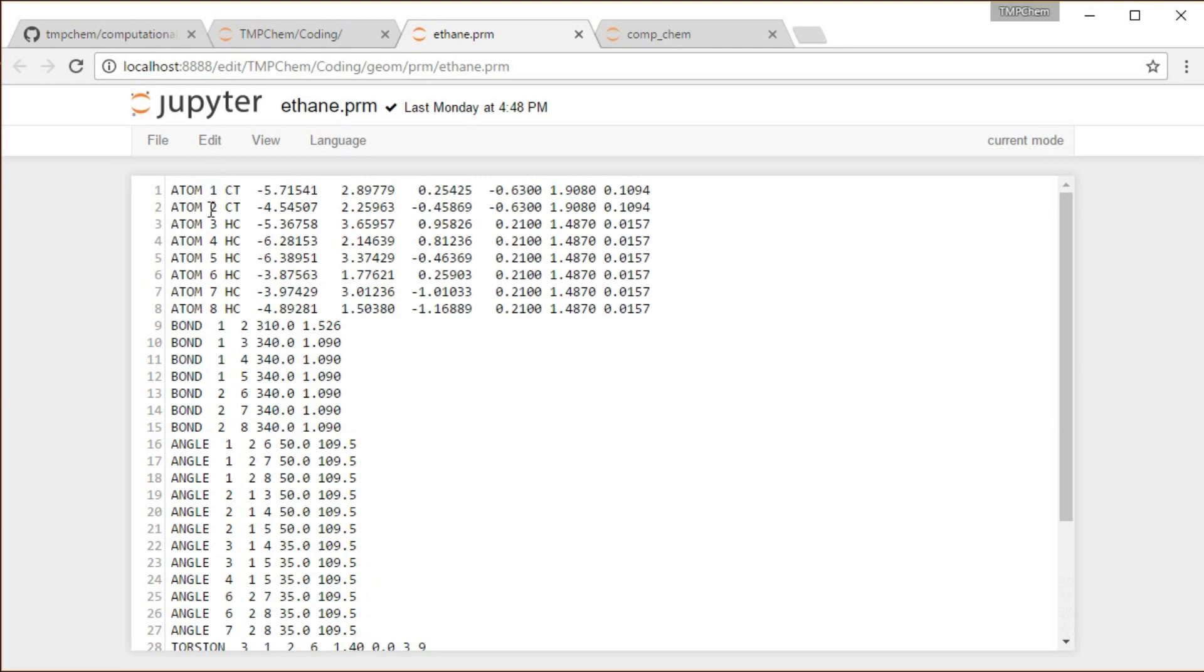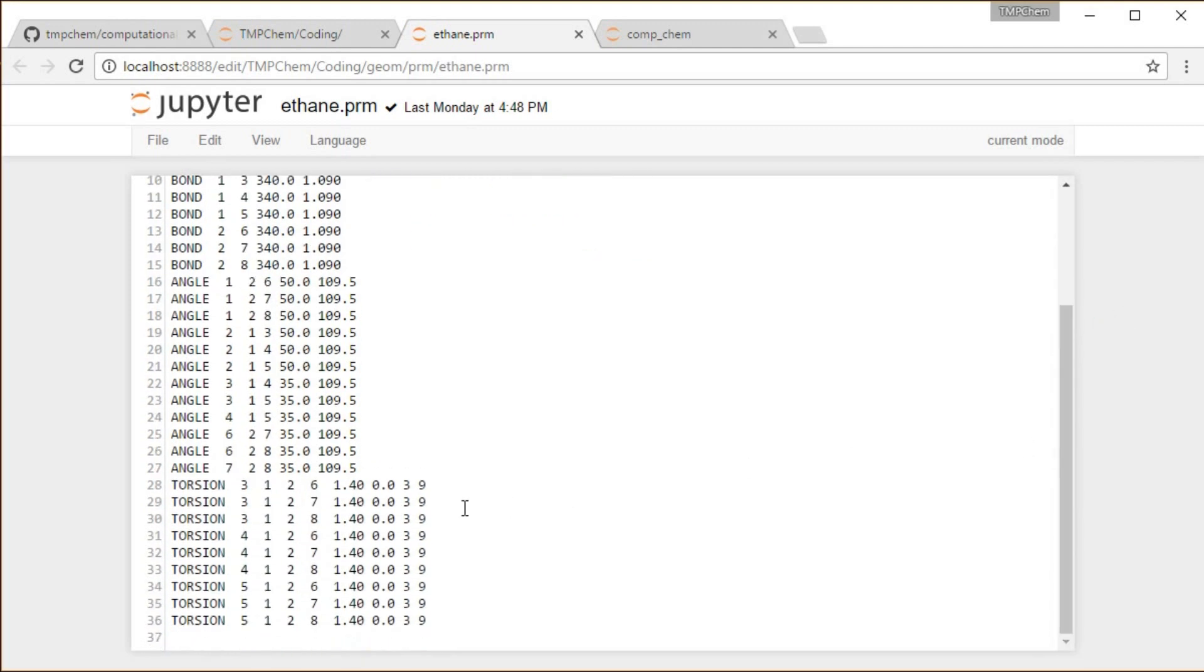Giving us the four atomic indices of what that torsion is, like three, one, two, six, for example. And then saying 1.4 kcal per mole, zero degree offset, so the barrier of 1.4, zero degree offset, threefold barrier, and there are nine distinct paths, which are those paths I have listed there.